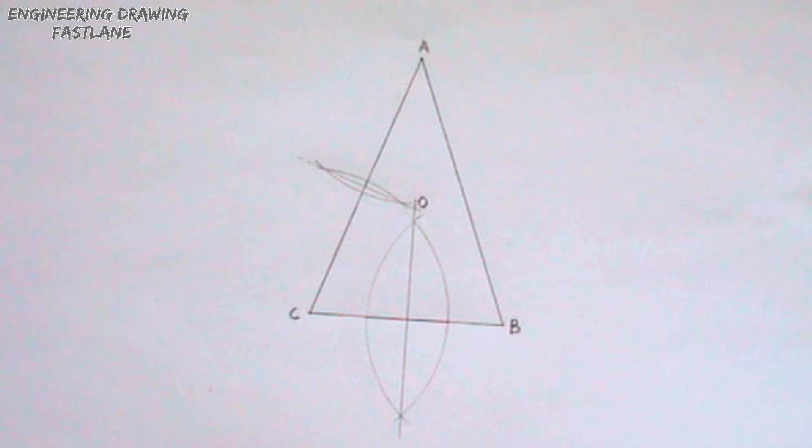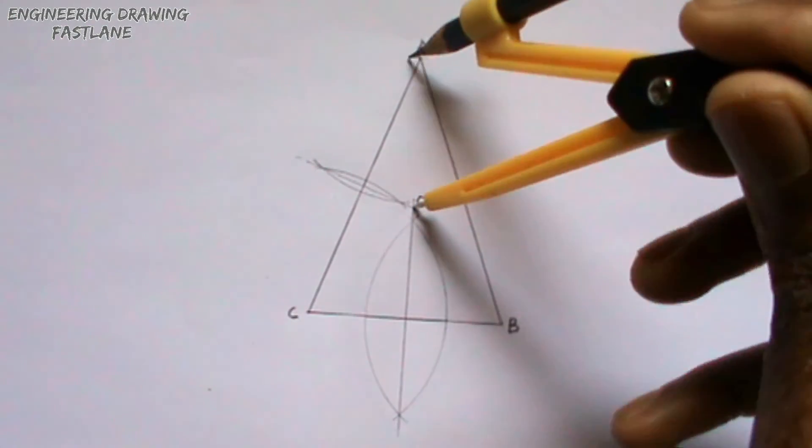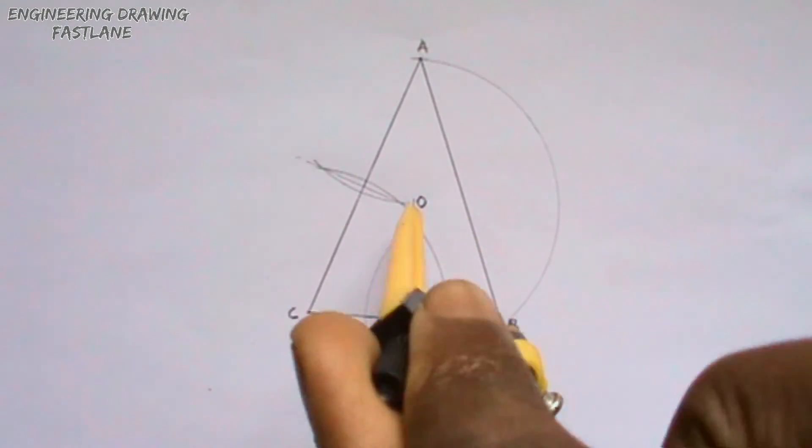To draw the circumscribing circle of triangle ABC, I will place my compass on point O and draw the circle. I will ensure that the circumference of the circle passes through the three corners of the triangle.